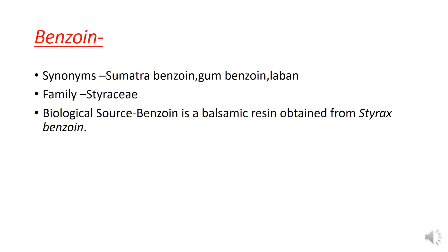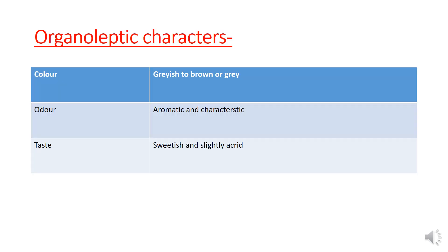The synonym of benzoin is Sumatra Benzoin, Gum Benzoin, and Laban. The family is Styracaceae. Regarding biological sources, benzoin is a type of balsamic resin obtained from Styrax species. The color is grayish to brown, and the odor is aromatic or characteristic.